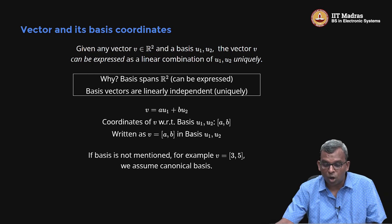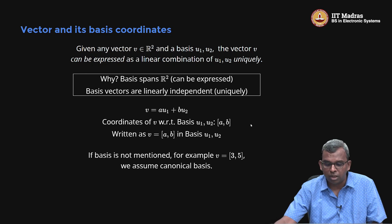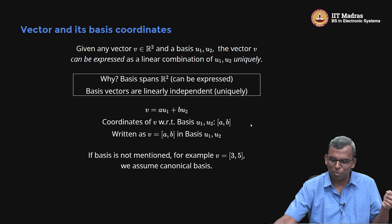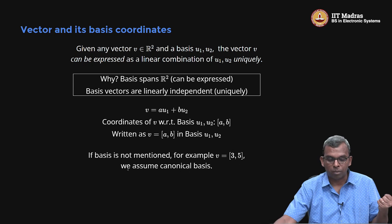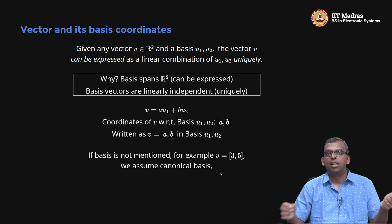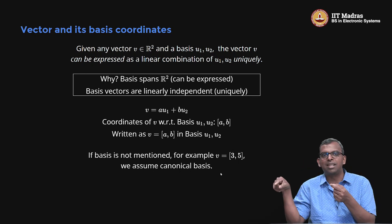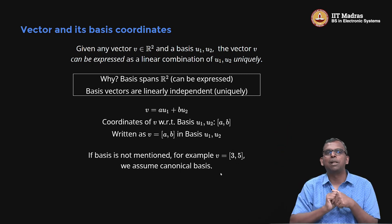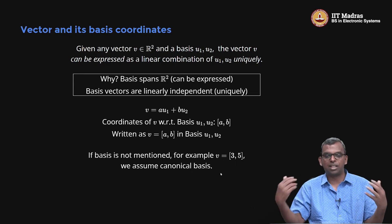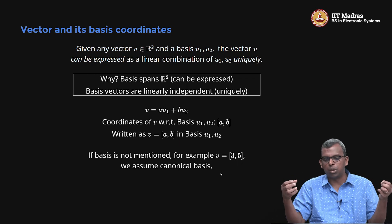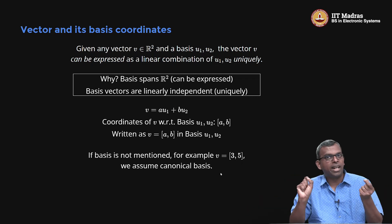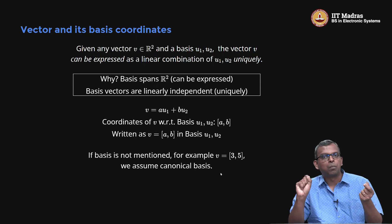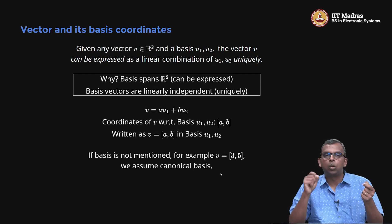If a basis is not mentioned, we simply write V = (3, 5) without specifying the basis — that is how we have been writing so far. When no basis is mentioned, we assume the canonical basis. So when I write (3, 5), you move three steps in the x-direction and five steps in the y-direction — that is according to the canonical basis. Using other bases will become a very, very useful tool as we go forward.